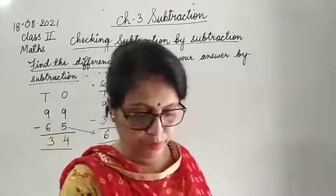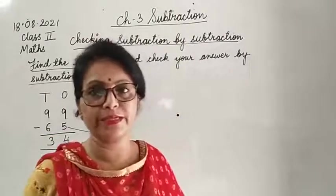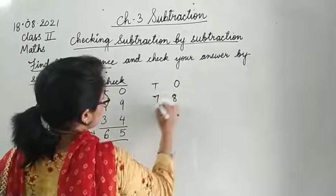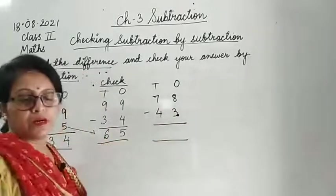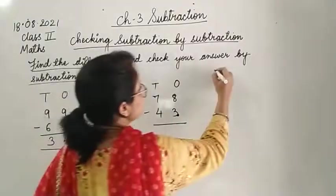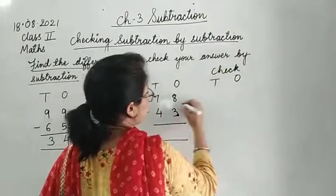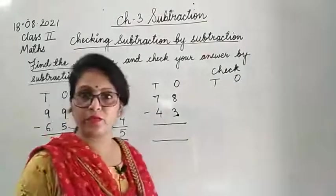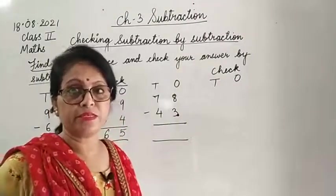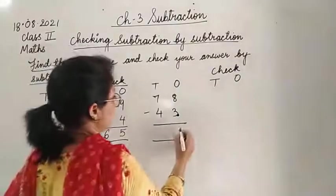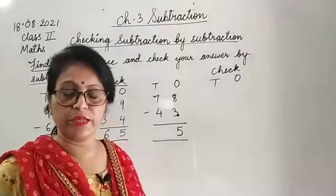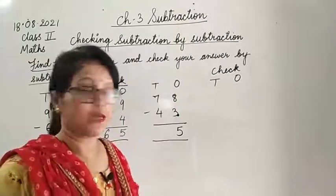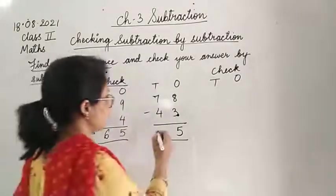Next question: 78 minus 43. 1s, 10s. 8 minus 3: take away 3, count from 3 onwards - 4, 5, 6, 7, 8 - answer is 5. Then 7 minus 4: take away 4, count from 4 onwards - 5, 6, 7 - answer is 3. So answer is 35.